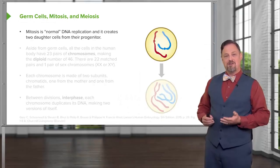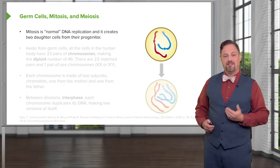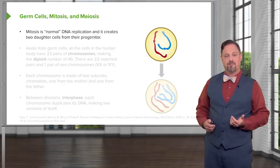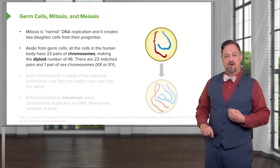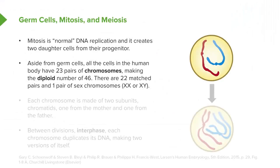Mitosis is the normal method of DNA replication and creates two daughter cells which are essentially genetically identical to their progenitor cell. Aside from germ cells which come into existence via meiosis, mitosis creates identical cells and every cell in the human body is made of 23 pairs of chromosomes. That means that we have a diploid number, 23 pairs equals 46 total.